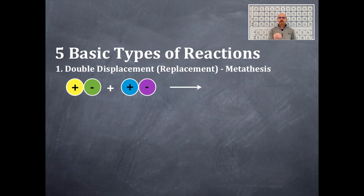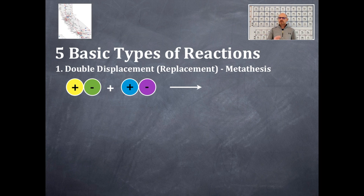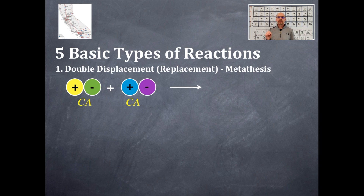The pattern is a plus and a minus and a plus and a minus — that's California. You have the symbol for California, C and A. Hopefully you remember back to nomenclature: the C stands for a cation, the A stands for an anion.